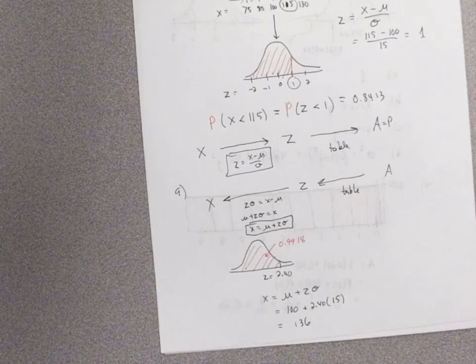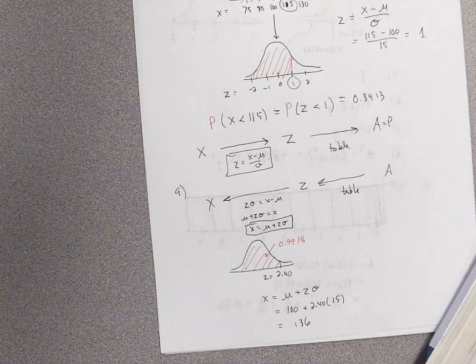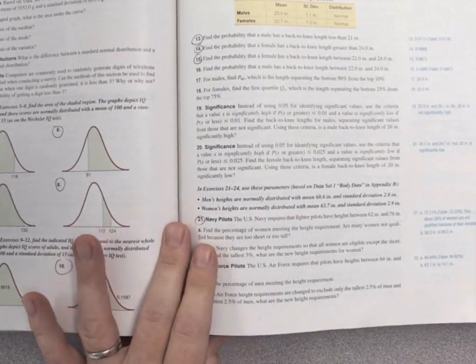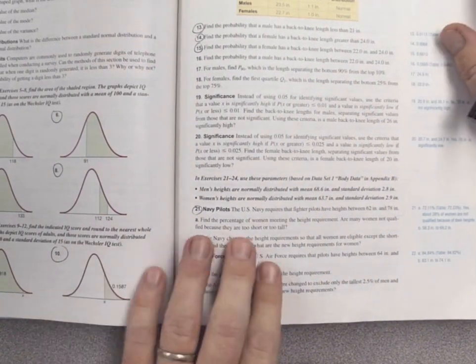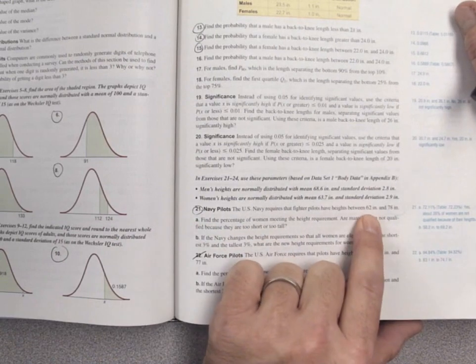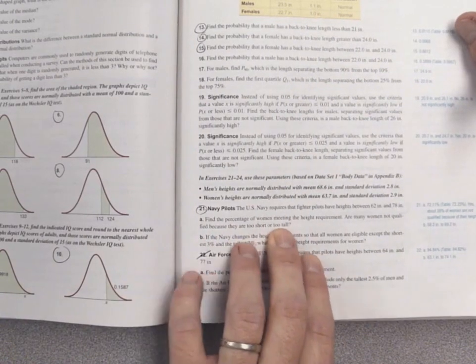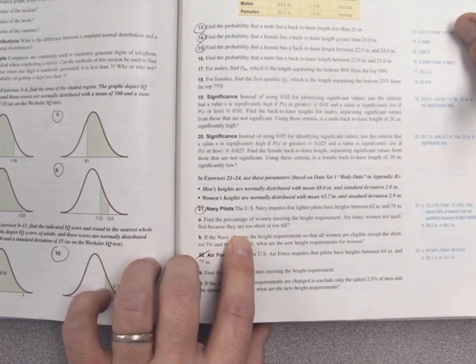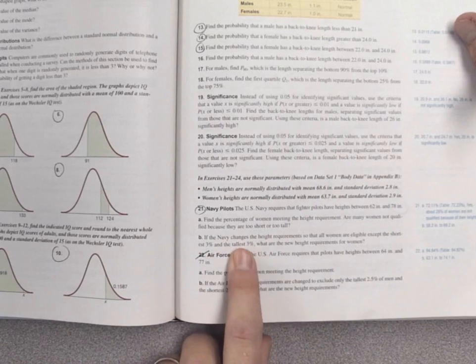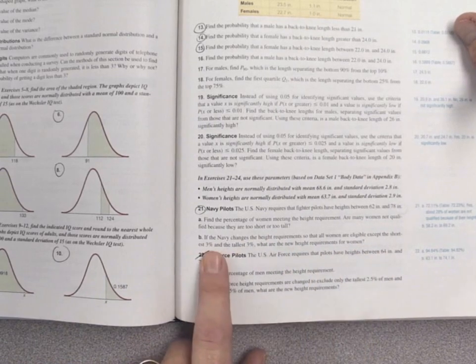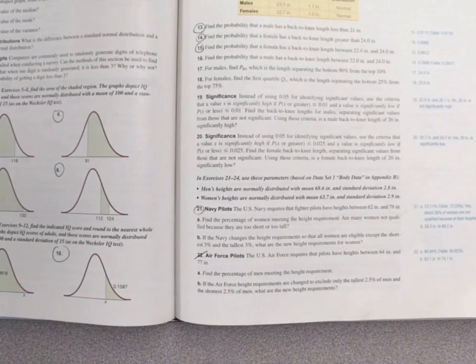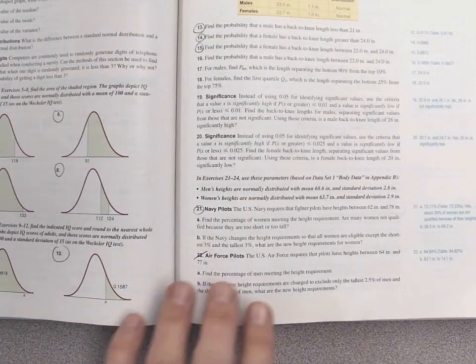Number 21: the US Navy requires that fighter pilots have a height between 62 inches and 78 inches — they have to fit in the plane and reach all the controls. Part A asks: find the percentage of women meeting the height requirement. Part B asks: if the Navy changes requirements to exclude only the shortest 3% and tallest 3%, what are the new height requirements? Part A goes from x values to area; part B reverses from probability back to x value.